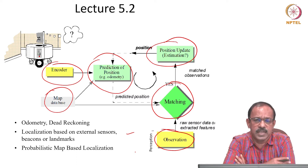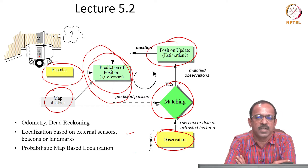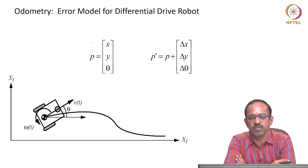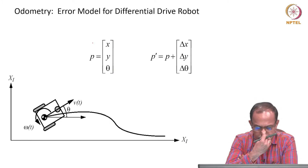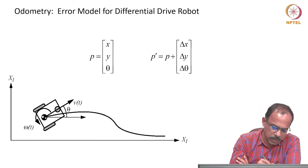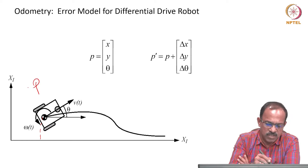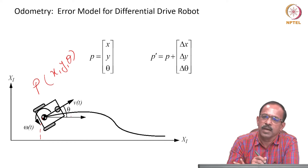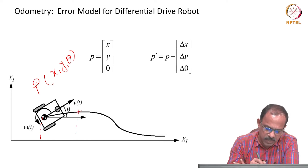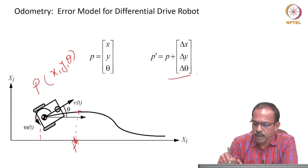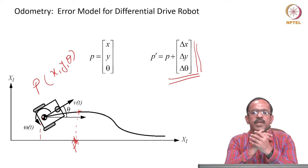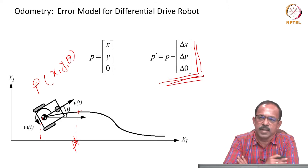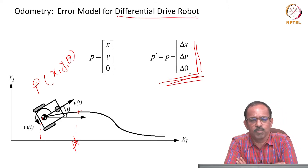The first step in map-based localization is the odometry-based prediction of the robot's position. We have the current position of the robot as p, which is x, y, theta. The robot is moving and reaches the next position p-dash, which is p plus delta_x, delta_y, delta_theta. The robot moves in the x-y plane and there is an angular change delta_theta. This is the normal process especially for a two-wheel robot with a differential drive.